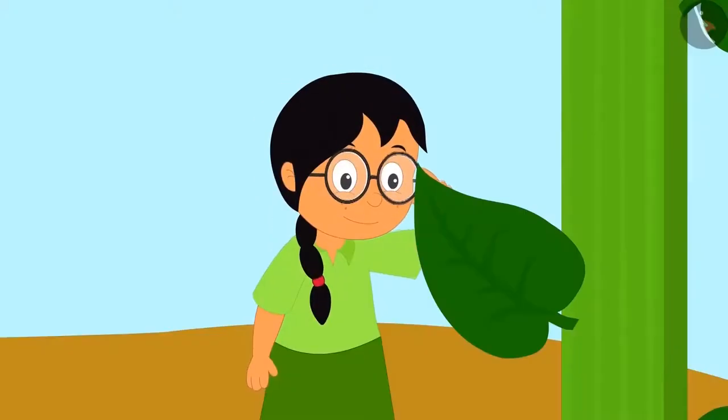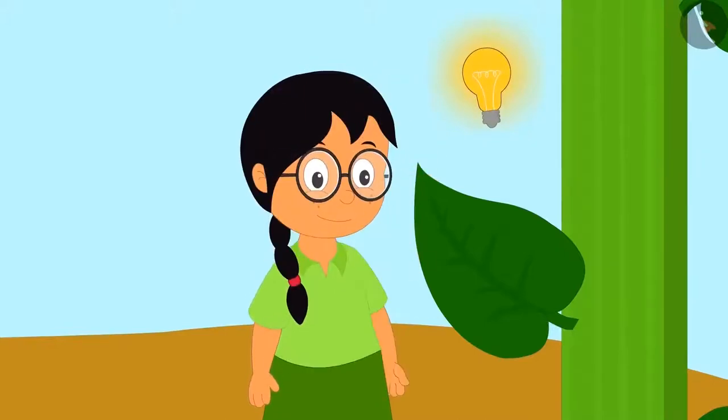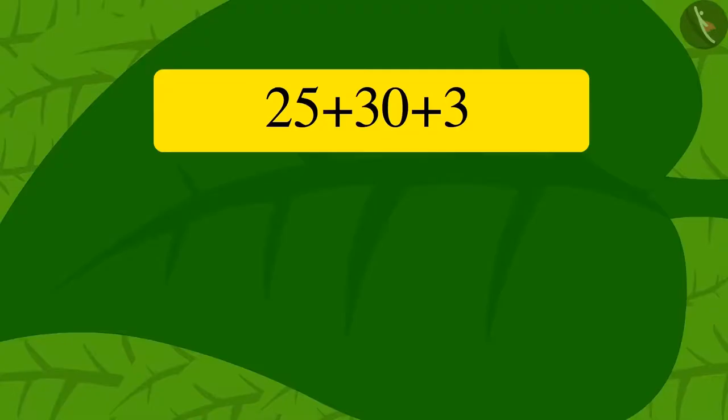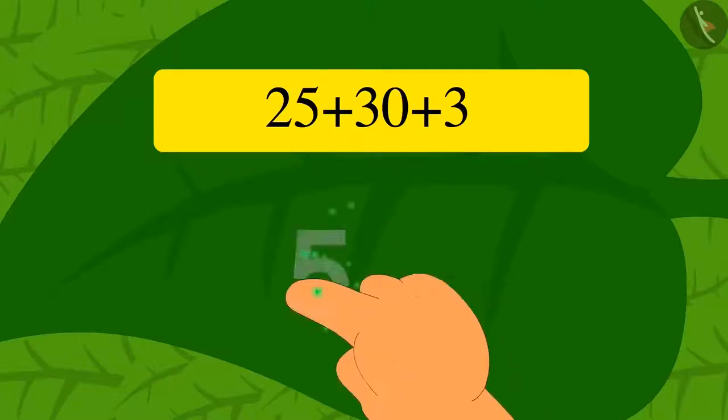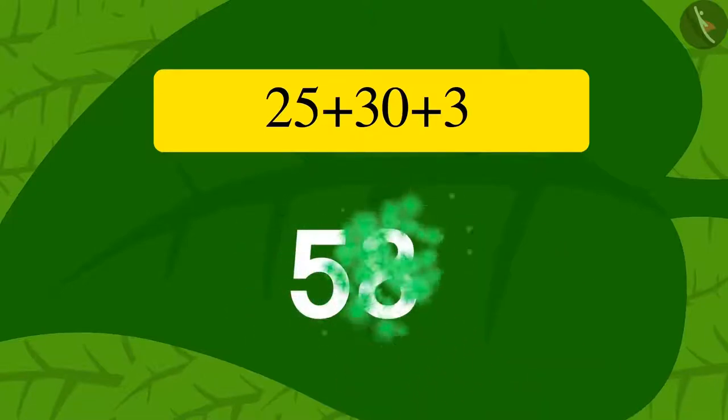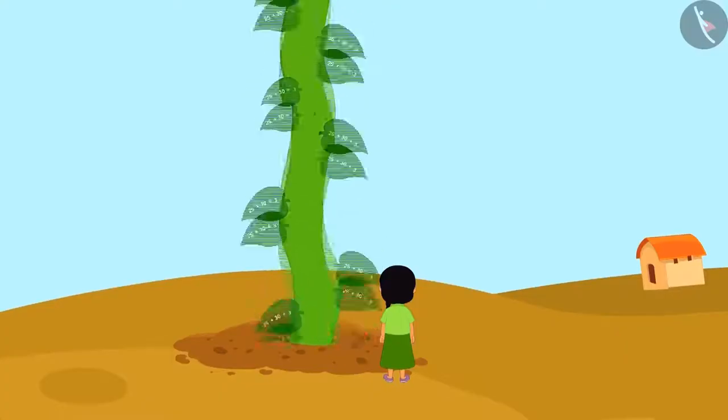Like what we did, Meenu too solved this riddle in her mind and wrote the answer 58 with her finger on the vine leaf. As soon as she wrote the answer to the puzzle, the vine became shorter as it sunk into the ground.